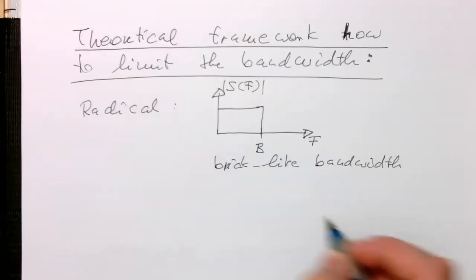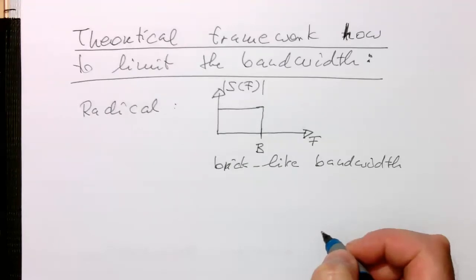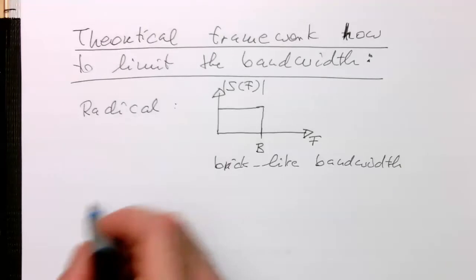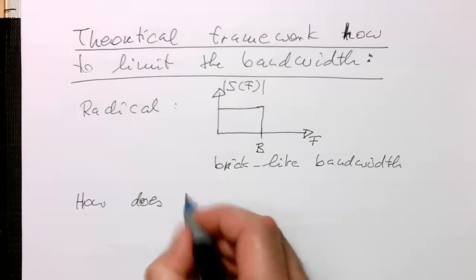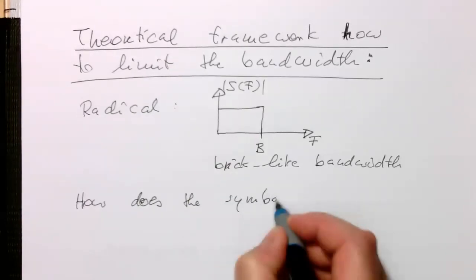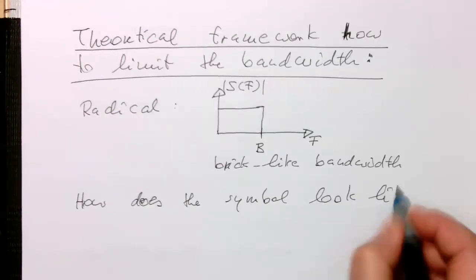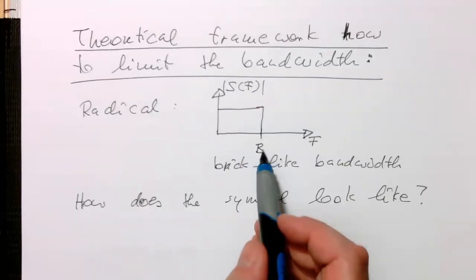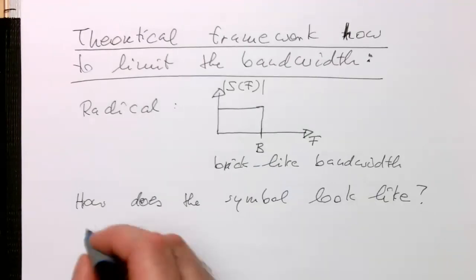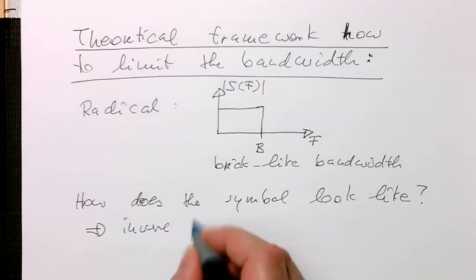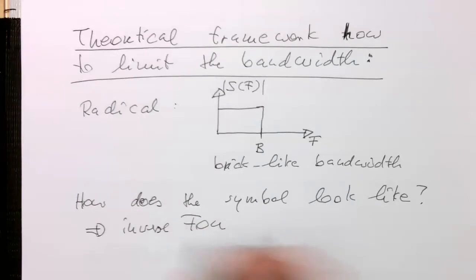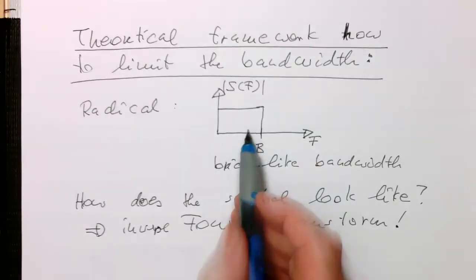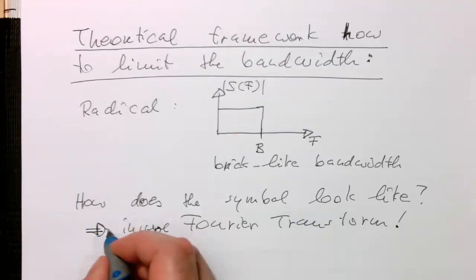So if we have a brick-like bandwidth, so how does the symbol actually looks like? So we need to do the inverse Fourier transform of this here. Inverse Fourier transform. And so we just take this brick here and doing inverse Fourier transform. And for those who know what's happening with these brick-like functions here, this comes out as a sinc function.